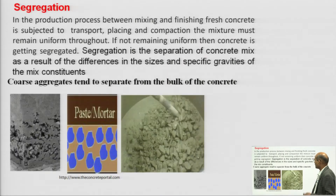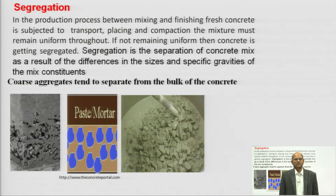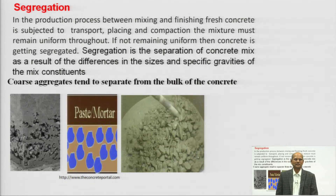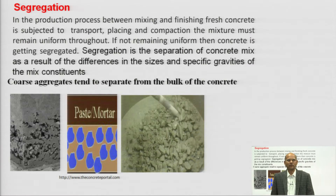These are the things connected to fresh concrete, and this is very important for maintaining the quality in the concrete. Concrete is a process material, and in this process of production, concrete batching is required. After batching, between mixing and finishing, we have steps like transportation, placing, and compaction of the concrete.